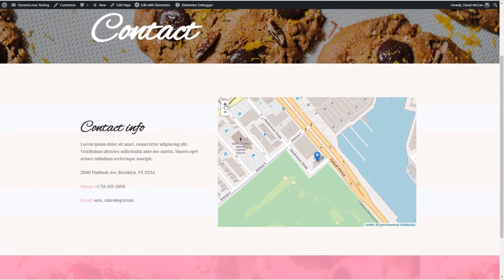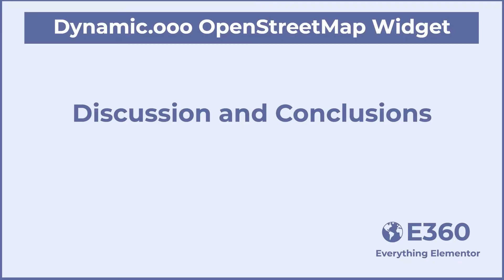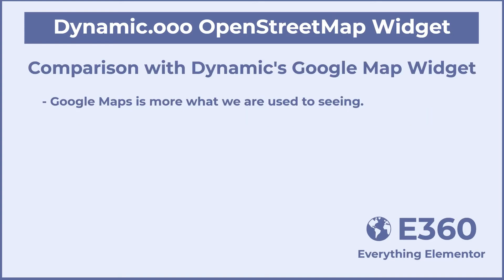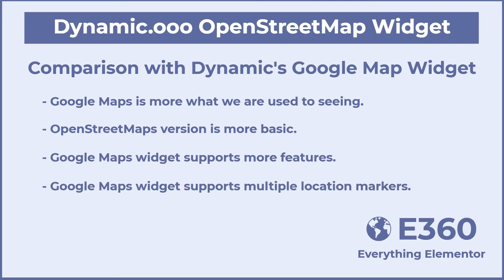It was just that easy. If you want the user to zoom in or zoom out, that's easy to do also. So we've done the walkthrough — now for some discussion and conclusions. If you compare the Google Maps and OpenStreetMap widgets, you'll see that the Google map is more what we're used to seeing, and the OpenStreetMap looks a bit more basic.